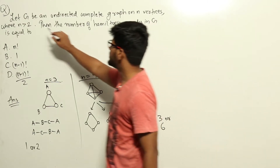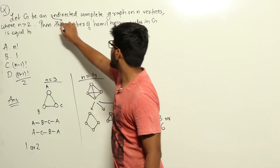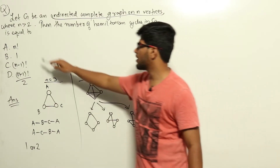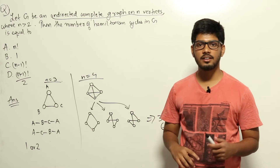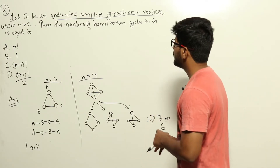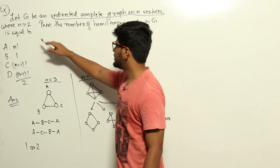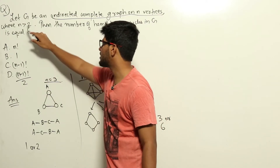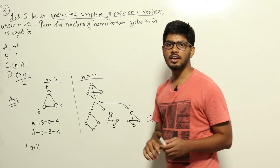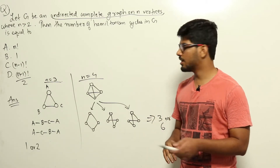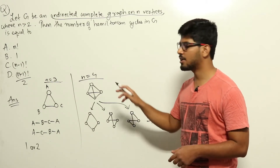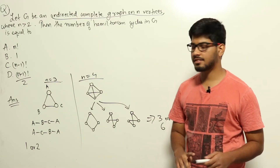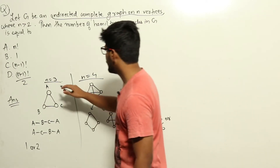G is an undirected complete graph on n vertices, and we need to find which option gives all the Hamiltonian cycles in the graph. We'll take each case starting from n equal to 3 — since n is greater than 2, n should be 3, 4, etc. We'll draw these graphs, find the Hamiltonian cycles, and then evaluate the options.